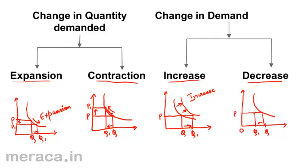This leads to an inward projection of the curve, because we can no longer remain on the same curve. The new equilibrium point is not on the original curve but inside it, leading to the formation of a new curve. We can see that the curve has moved inward — that is, there is an inward movement, and the curve has shifted leftwards, towards the origin. This reduction in quantity demanded is called decrease in demand.